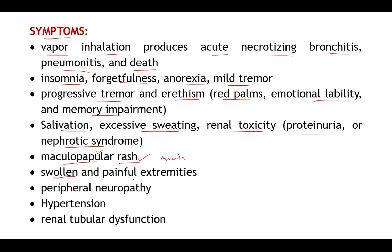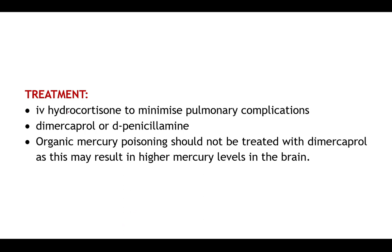Apart from that, swollen and painful extremities may occur — the limbs or fingers might be swollen and painful. Peripheral neuropathy may also occur, meaning the peripheral neurons may get damaged. Hypertension may be seen, or renal tubular dysfunction — meaning the kidney tubules may not function appropriately, affecting urine formation through absorptive and secretory processes.